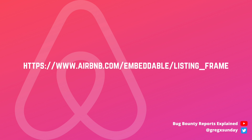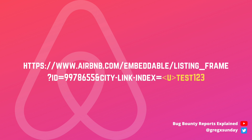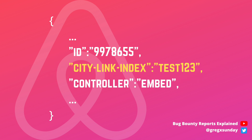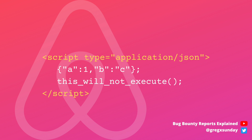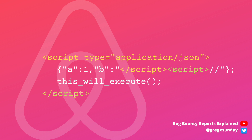On the embeddable listing frame endpoint on Airbnb, data from parameter ct-link-index was reflected inside the JSON body. The first thing to know is that there is a script tag with type application/json, and inside such a tag no JavaScript code gets executed. But if you can smuggle a closing script tag — even inside a string in the JSON — the tag gets closed and then you can open another script tag, this time a normal one, and execute JavaScript code inside. But of course it didn't work in this case because if it would, I wouldn't make a video about it.